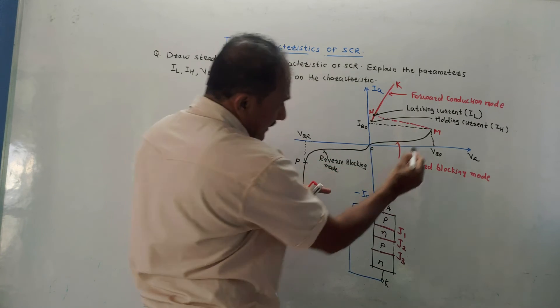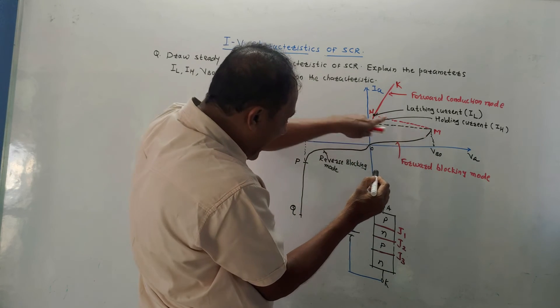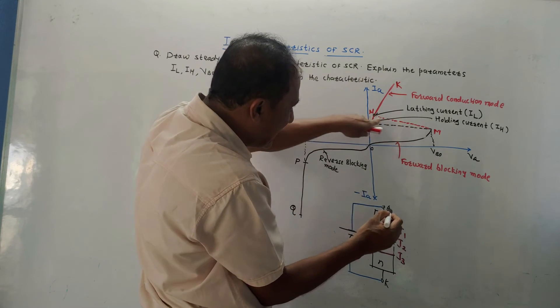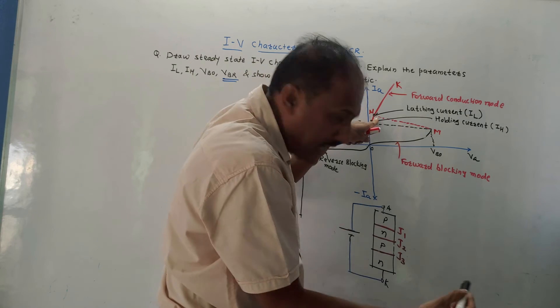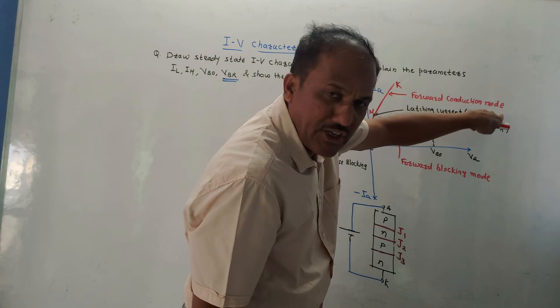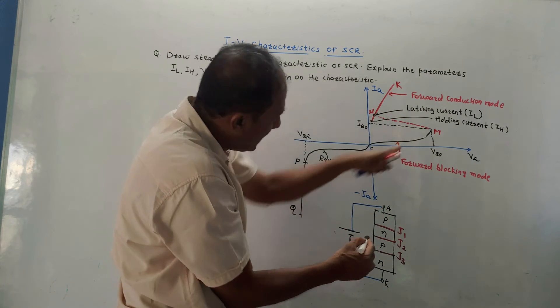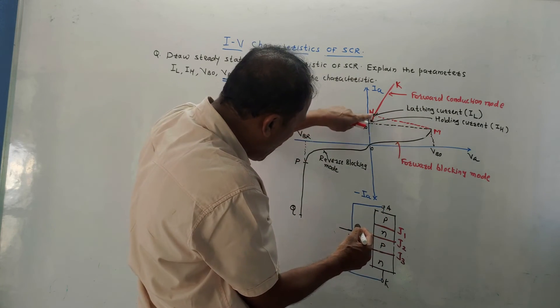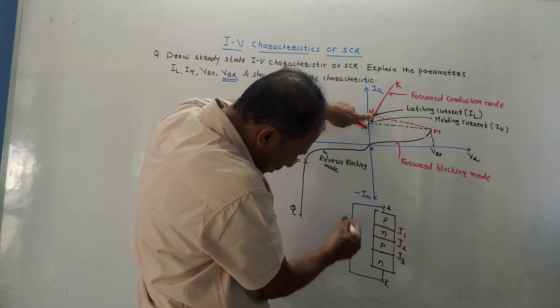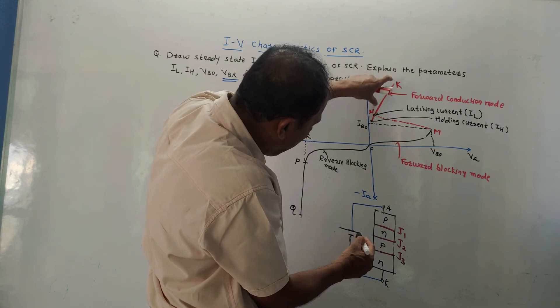Whenever this voltage is increased, the SCR goes into the third mode, that is known as forward conduction mode. Later on, first, as I said, if you increase this voltage, point M gets shifted to point N. Then as you go on increasing this voltage, this point N may be anywhere along the line NK.